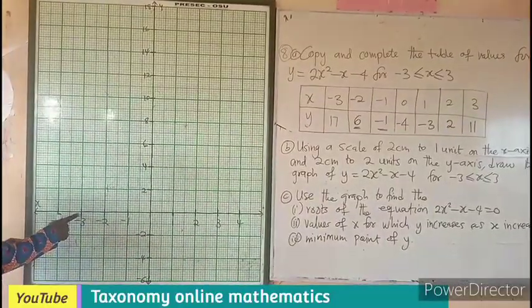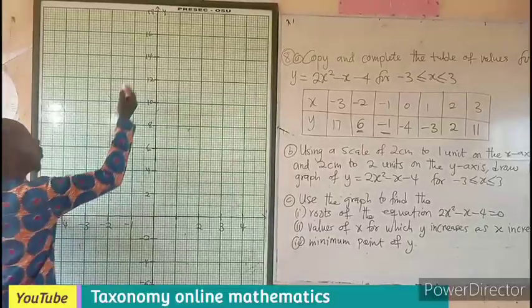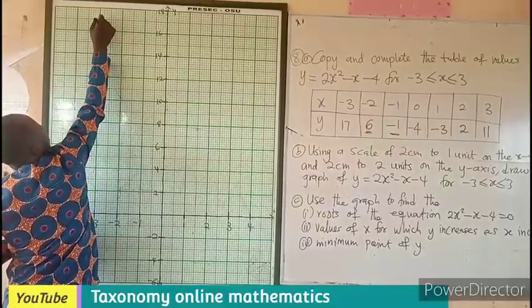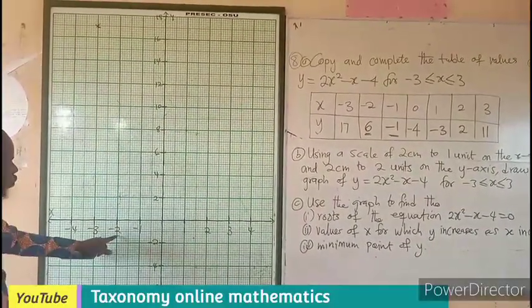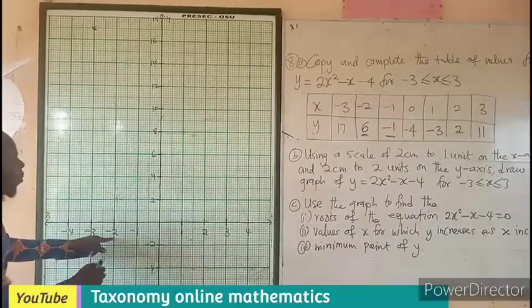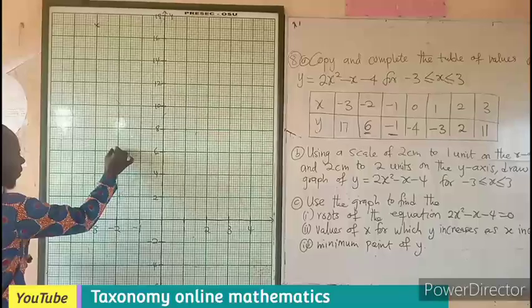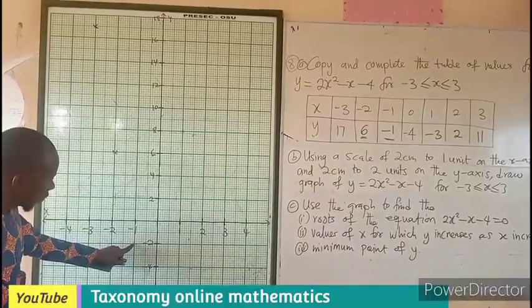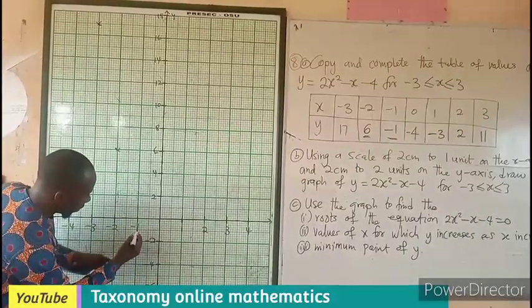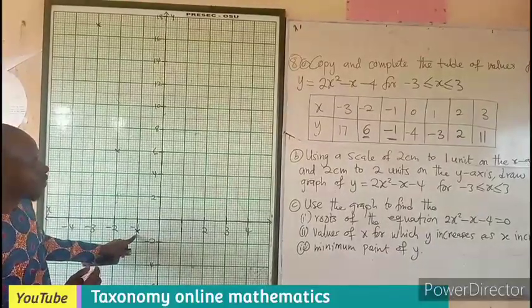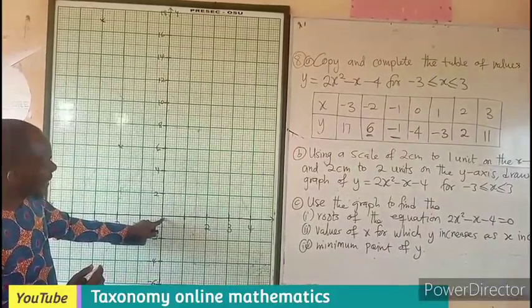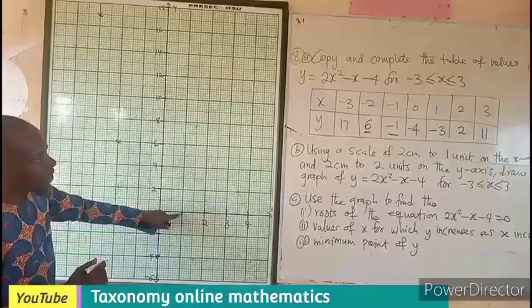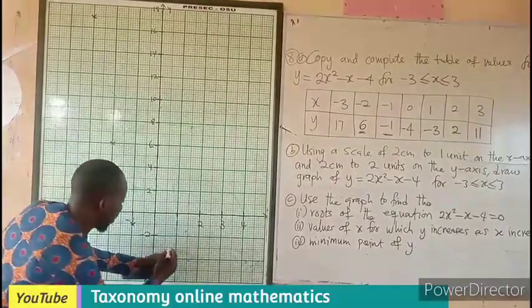Beginning with x = -3 on the x-axis, y = 17. The first point goes there. x = -2 gives y = 6, so the second point is here. x = -1 gives y = -1, moving downward to negative 1. x = 0 gives y = -4 on the y-axis, plotted here. Moving to x = 1, y = -3, somewhere here.